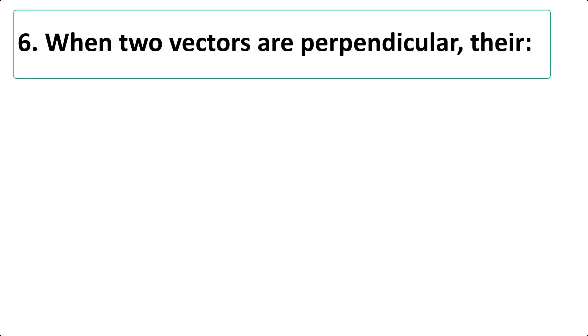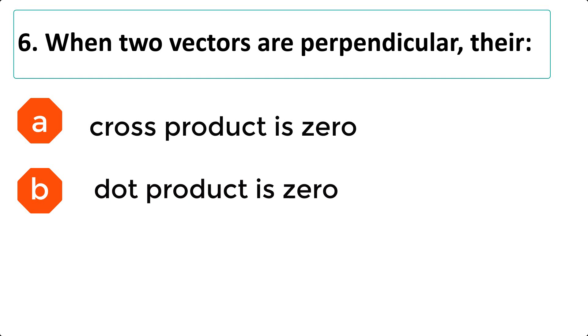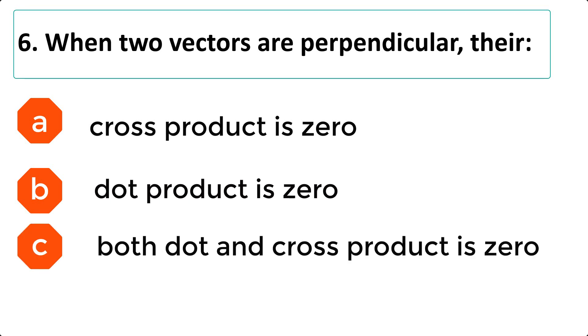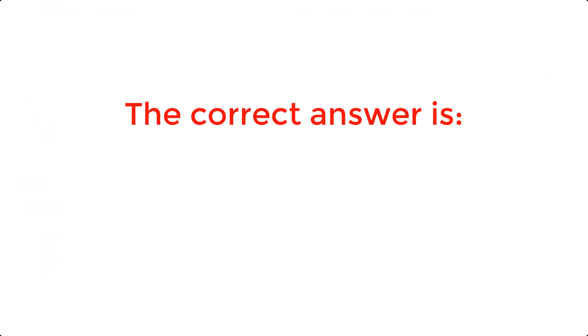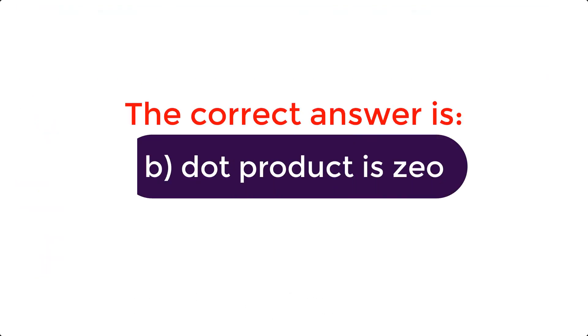When two vectors are perpendicular, their: a. cross product is 0 b. dot product is 0 c. both dot and cross product is 0 d. none of the option. The correct answer is b. Dot product is 0. Question 5.